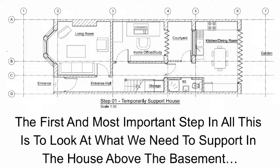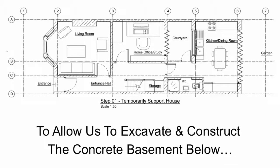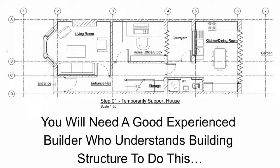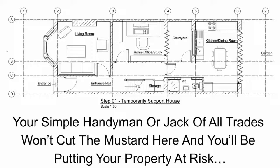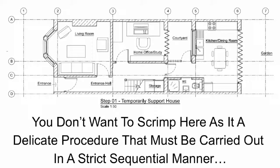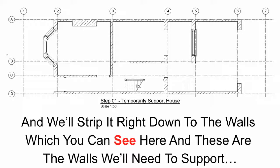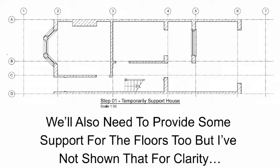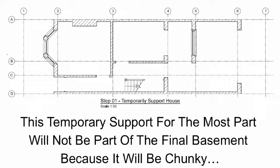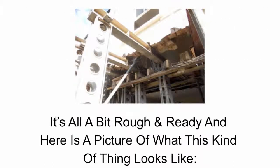On with the 9 steps. The first and most important step is to look at what we need to support in the house above the basement. The walls at ground floor will need to be temporarily supported to allow us to excavate and construct the concrete basement below. You will need a good experienced builder who understands building structure to do this — a simple handyman won't cut the mustard here and you will be putting your property at risk. We strip down the drawing to the walls we need to support. The temporary support will not be part of the final basement because it will be chunky and won't tie in with the room layouts — here's a picture of what this kind of thing looks like.